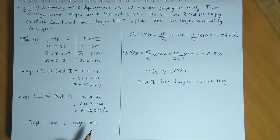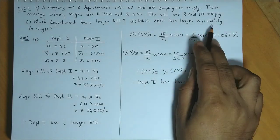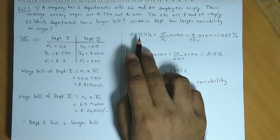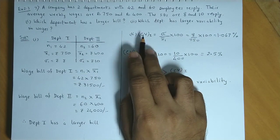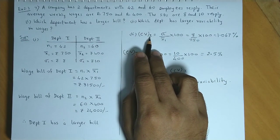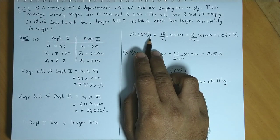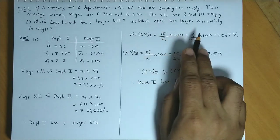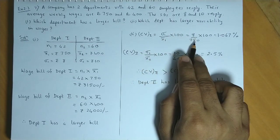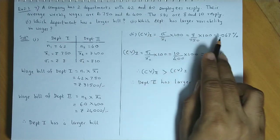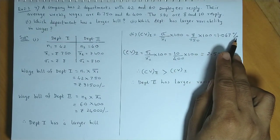Next, we're asked which department has larger variability. Variability we will check with the help of coefficient of variation, CV. For Department 1, CV is SD upon mean into 100, so that's 8 upon 750 into 100. CV for the first department is 1.067 percent.